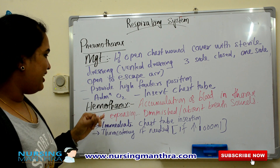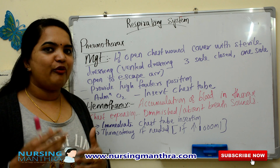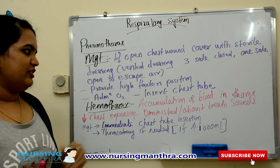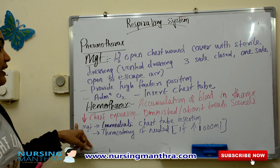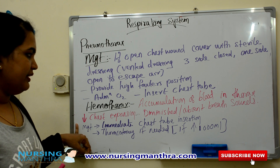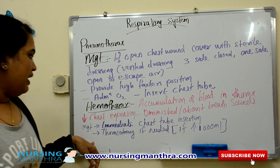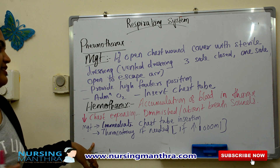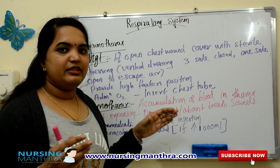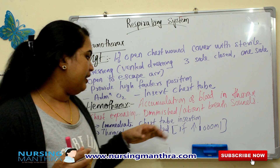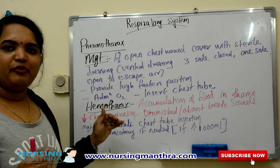Next we will move through hemothorax. 'Hemo' means blood, so hemothorax is the accumulation of blood in the thoracic cavity. Decreased chest expansion and diminished or absent breath sounds will be present. Management is immediate chest tube insertion — ICD insertion. If more than 1000 ml of blood is collected, thoracotomy may be required.